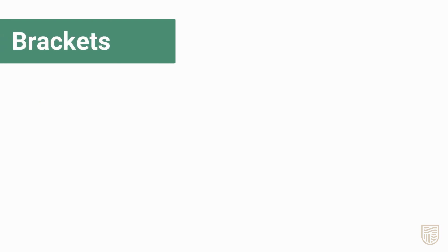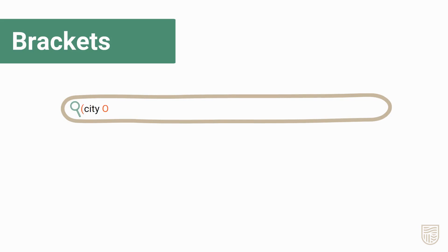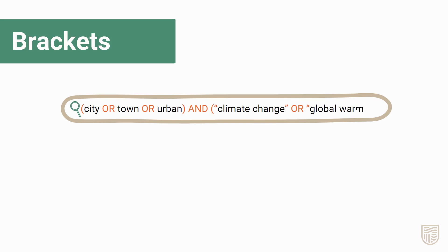You can use multiple search strategies in OneSearch by organising them into groups with brackets. It's like doing multiple searches at once. To search for synonyms, put them in brackets with OR and add the rest of your search outside the brackets. For example, in one set of brackets place city OR town OR urban. In a second set of brackets, add climate change OR global warming, both within quotation marks as phrases. Between these two sets of brackets, add AND to combine these two lots of synonyms.